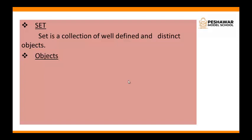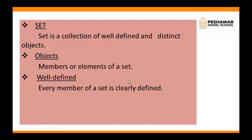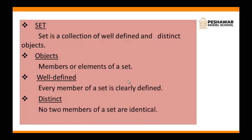The first term is object. Object means members or elements of a set. Well-defined means every member of a set is clearly defined. The third term is distinct. Distinct means no two members of a set are identical.